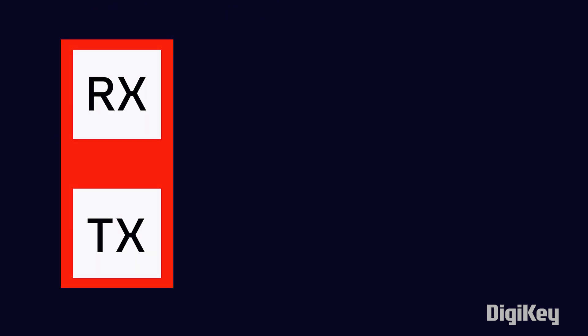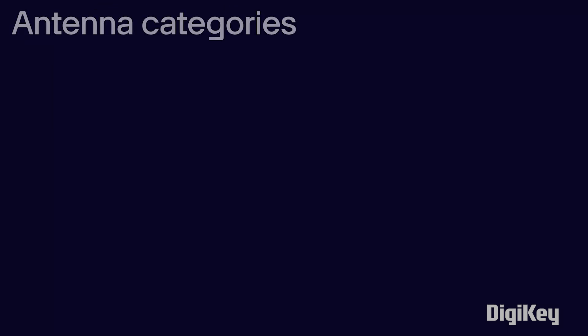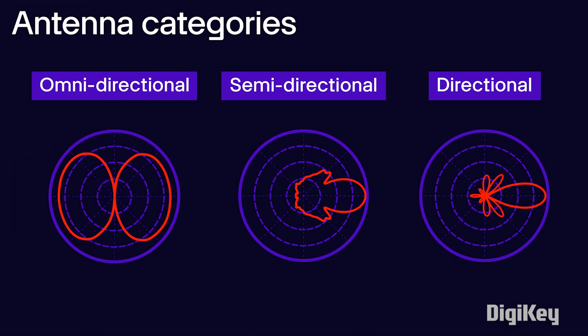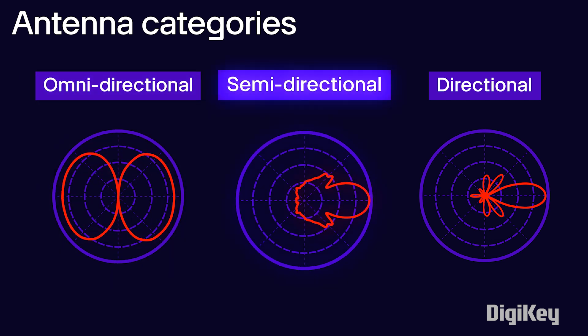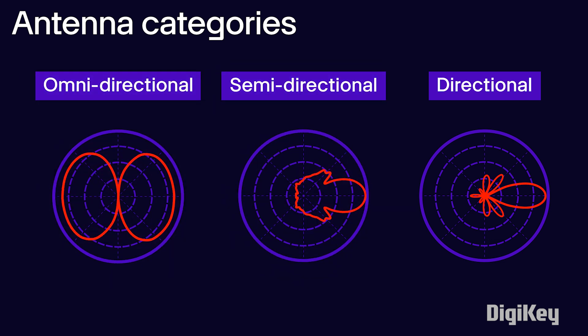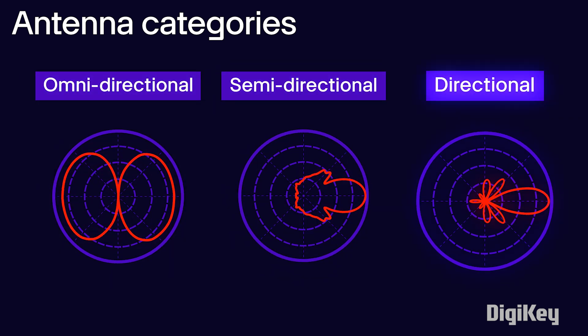Antennas are designed to both transmit and receive, preventing the need for two antennas in one design. There are three broad categories of antennas: omni-directional, semi-directional, and directional.